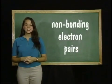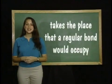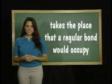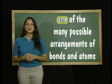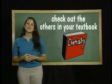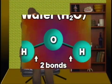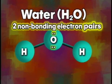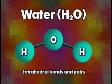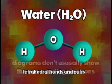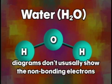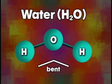Molecules can also have non-bonding electron pairs. The non-bonding electron pair takes the place that a regular bond would occupy. We will use water again as an example, but know that this example shows you only one of the many possible arrangements of bonds and atoms. Be sure to check out the others in your textbook. Water has two bonds between hydrogen and oxygen, but oxygen also has two non-bonding electron pairs. This gives water a tetrahedral arrangement of electron pairs and bonds. Since diagrams don't usually show the non-bonding electrons of oxygen, we usually just say that the water molecule is bent rather than referring to it as tetrahedral.